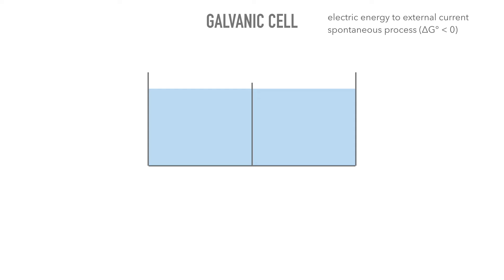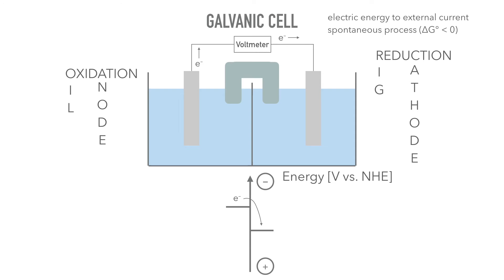Electric energy is released to an external current. Again, we have an anode with the oxidation and a cathode with the reduction. Both half reactions happen in two different compartments. We need a so-called salt bridge for balancing charges. In a galvanic cell, electrons flow downhill in energy, but as before, from the anode to the cathode.